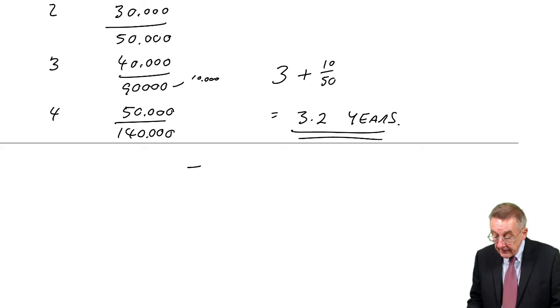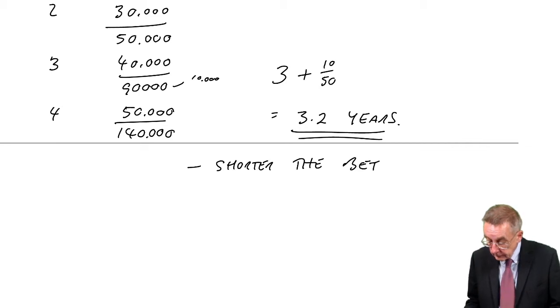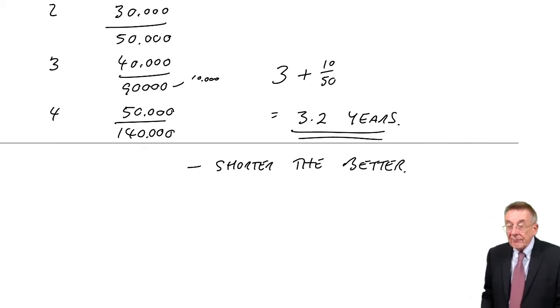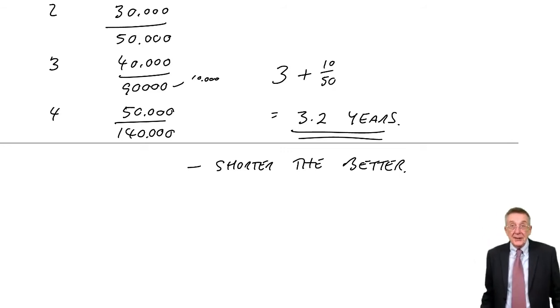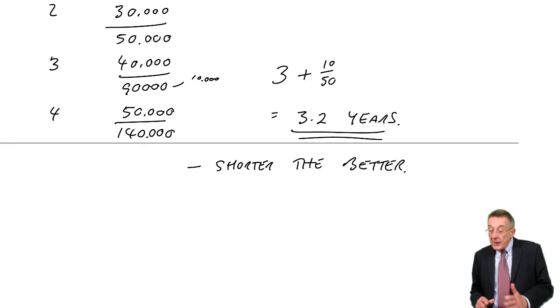So that's how long it looks as though it's going to take to get the money back. And as I said earlier, the shorter that is, the better, because the further into the future you're estimating, the more uncertain you're going to be. If this one was going to take 10 years to get the money back, I'd be frightened that we might never get the money back because that estimate for 10 years time will be little more than a guess.